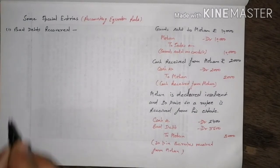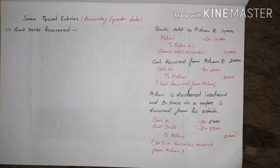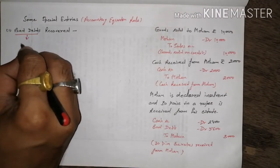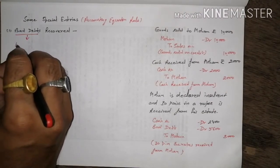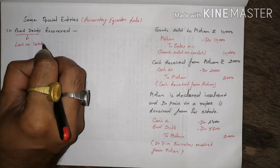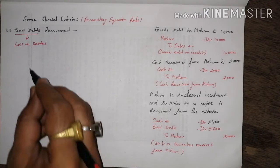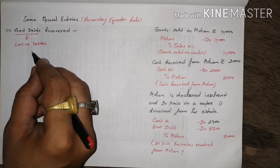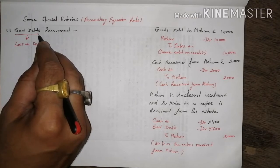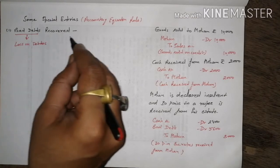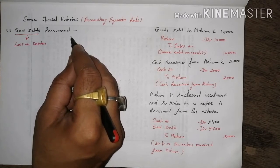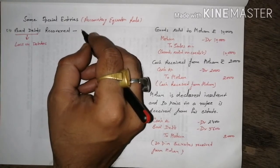First special entry: bad debts recovered. Bad debts are a loss on debtors — unrealized amounts from customers that are written off as a loss. When bad debts that were previously written off are subsequently recovered, a journal entry is needed.